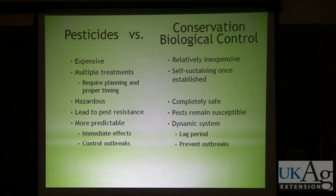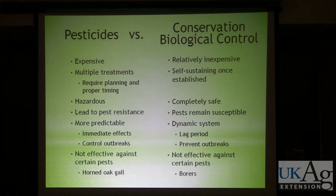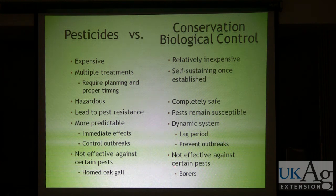Biological control is a dynamic system. There's a lag period involved that sometimes is not acceptable. But the hope with biological control is that the natural enemies are out there continually working and providing a security blanket, keeping those pest populations low. Both approaches are not going to be particularly effective against certain pests — we haven't found any chemical control options that work well with horned oak gall, and on the other hand, with borers, we can't really rely on the natural enemies because one borer is too much for a tree.